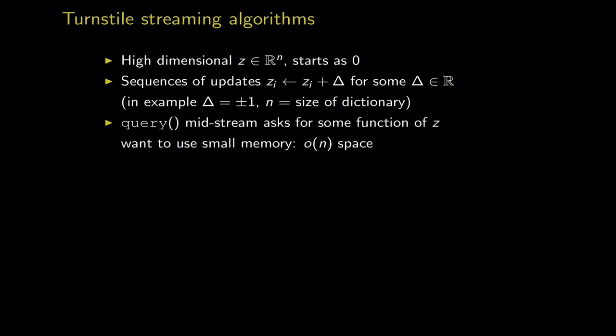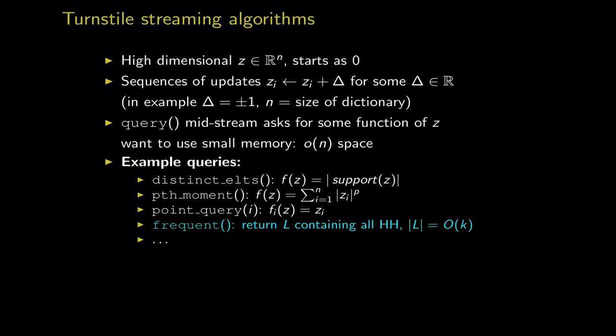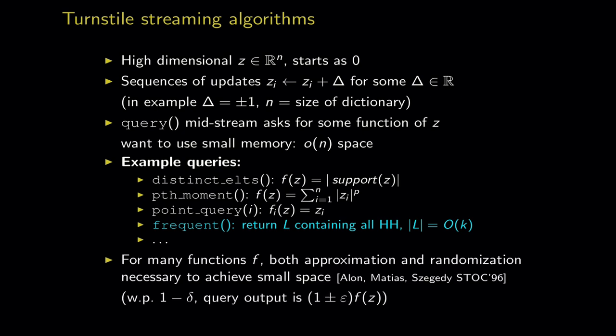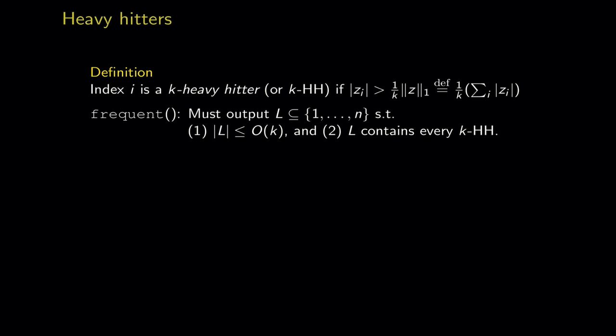At some point someone says query and you output some function of vector z. Possible queries include: distinct elements (support size of z), and the frequent items query (return a small list containing all heavy hitters). For many of these problems, some form of approximation and randomization are necessary to achieve non-trivially small memory — these are Monte Carlo randomized algorithms that succeed with 99% probability and output answers up to some notion of error.